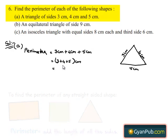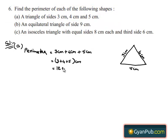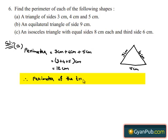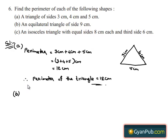By adding we get 3 plus 4 gives 7, and 7 plus 5 gives 12 centimeters. Therefore, the perimeter of the triangle is equal to 12 centimeters. Now take down the second bit — we have to find the perimeter of an equilateral triangle of side 9 centimeters.